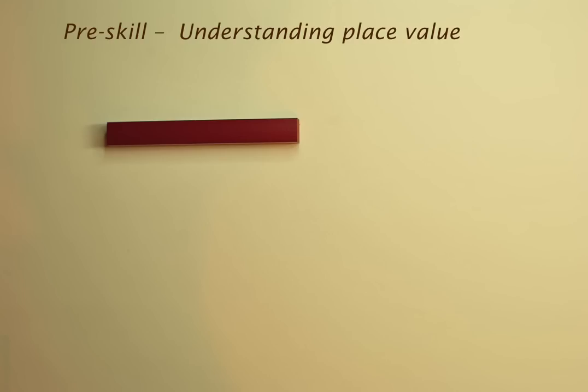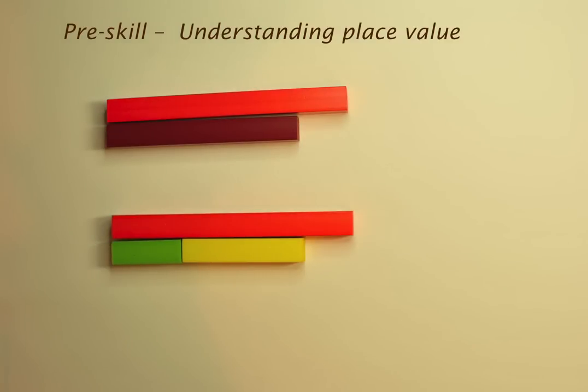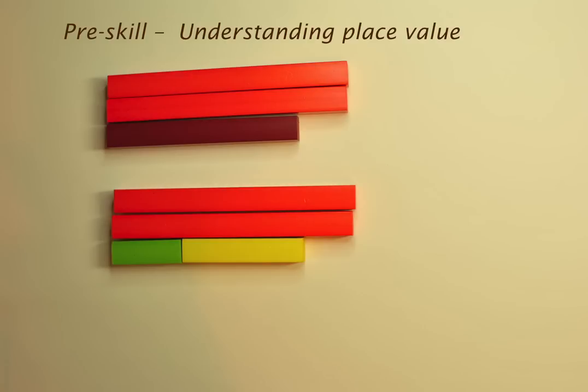We need to know enough about place value to recognize that if we know that 8 can be built from 3 and 5, we must also know that 18 could be built from 13 and 5, or 15 and 3, or that 28 could be built from 23 and 5, or 25 and 3, and so on.